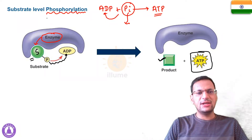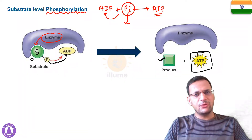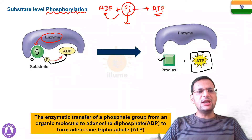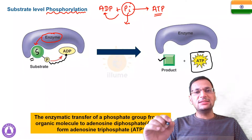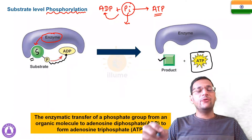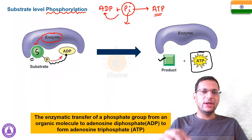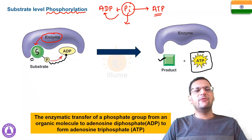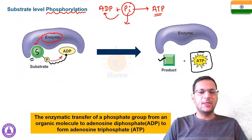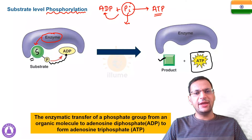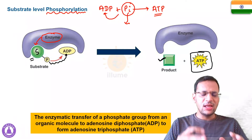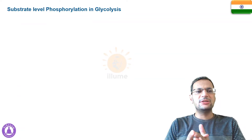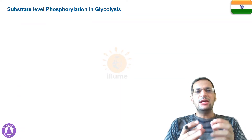The source of the inorganic phosphate for ATP formation is the substrate itself — that's why this reaction is called substrate level phosphorylation. So we define it as: substrate level phosphorylation is the enzymatic transfer of a phosphate group from an organic molecule (the substrate) to adenosine diphosphate (ADP) to form ATP, adenosine triphosphate.